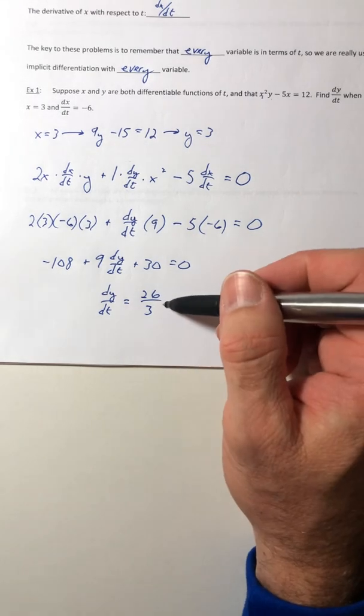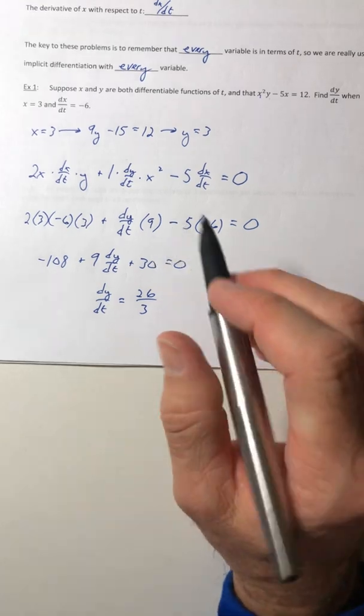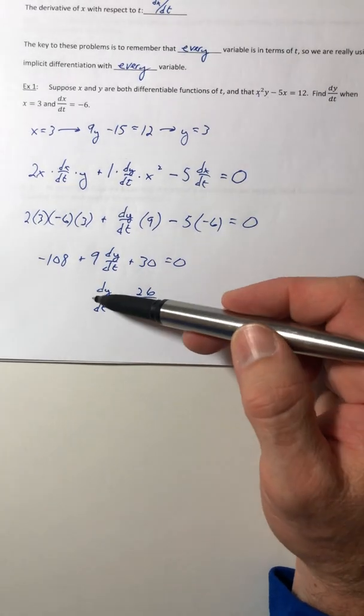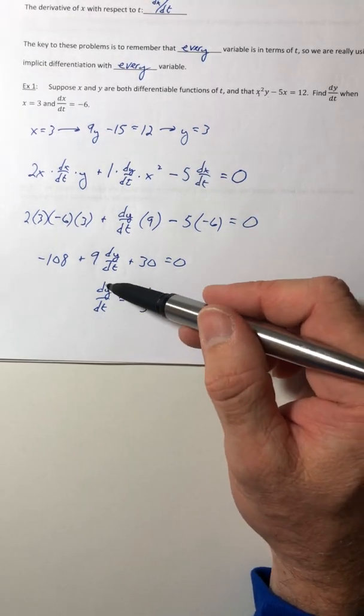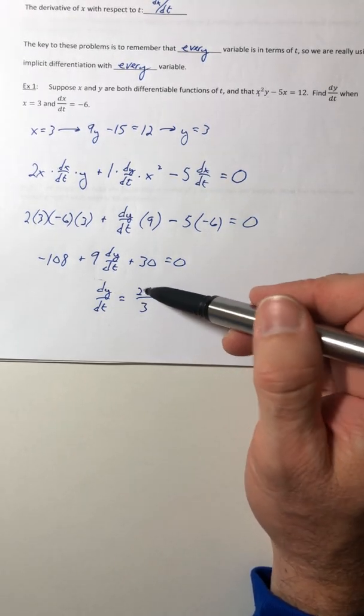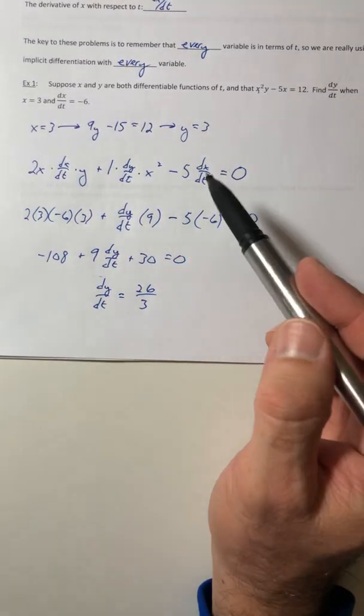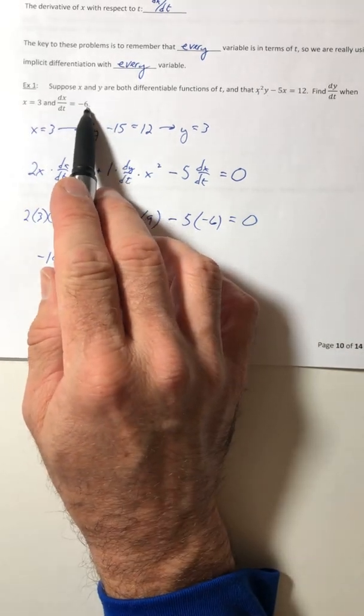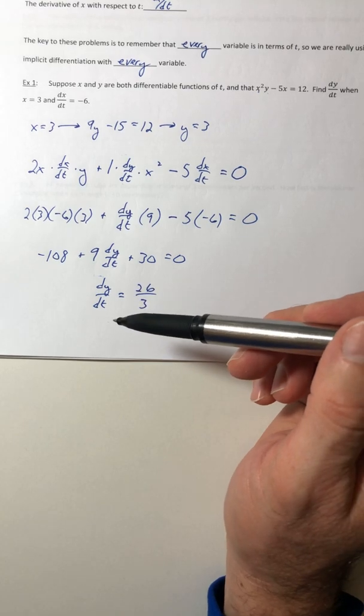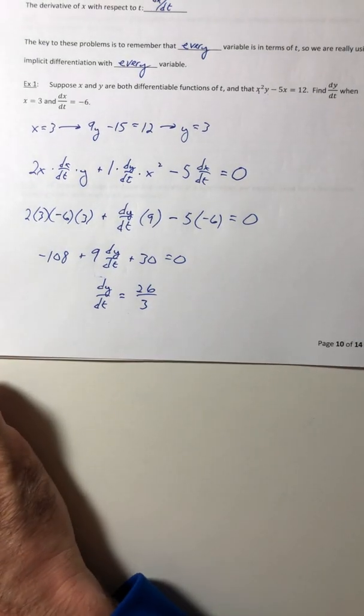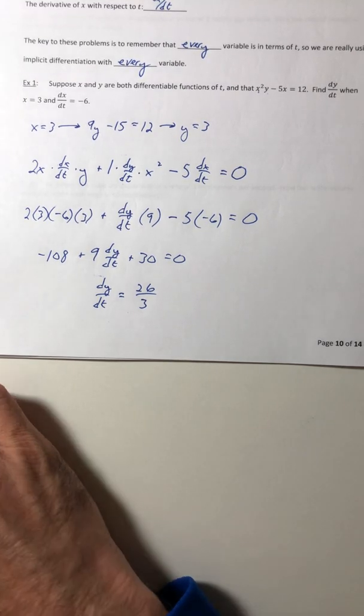Okay, so what does this actually mean? Like dy/dt = 26/3, what exactly is that? Well, remember that derivatives are a rate. So the rate of change of the y's is changing at 26/3 at the point (3, 3). So the x is changing at -6, so the x's are decreasing, but the y values are going up, they're increasing. All right, so let's stop the video here, and then we're going to get into some actual real life type problems.